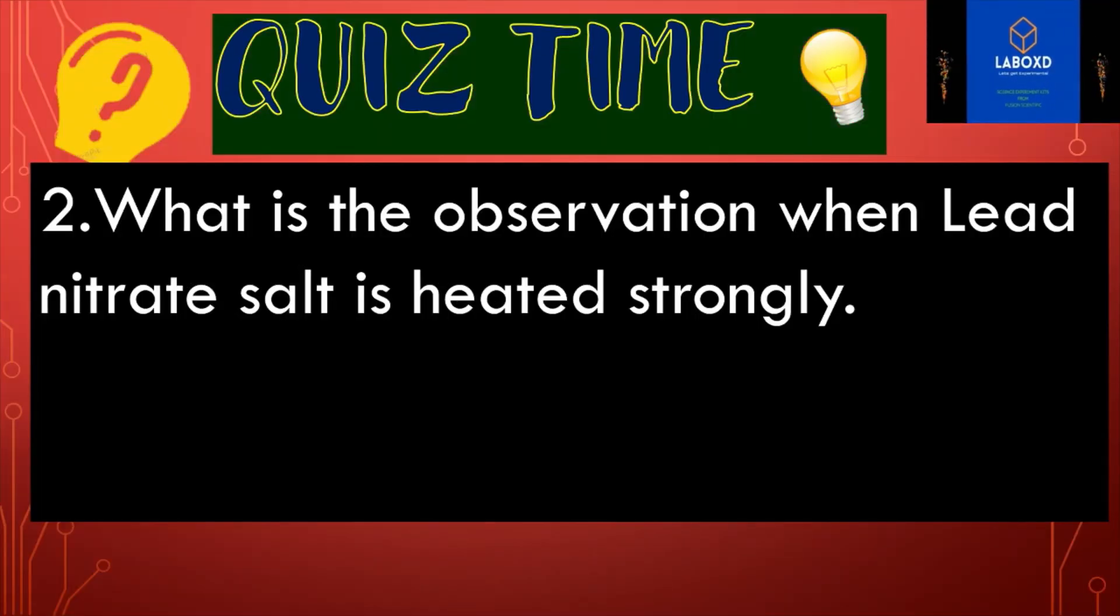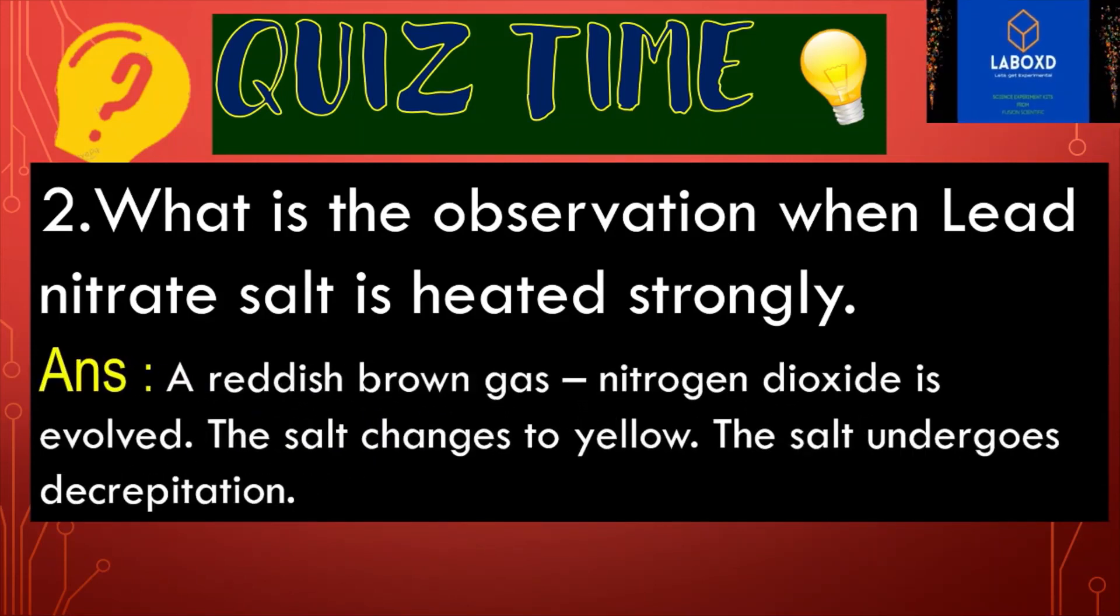Second question is what is the observation when lead nitrate salt is heated strongly? Can you guess the answer? Yes, the answer is a reddish brown gas, nitrogen dioxide is evolved. The salt changes to yellow. The salt undergoes decrepitation.